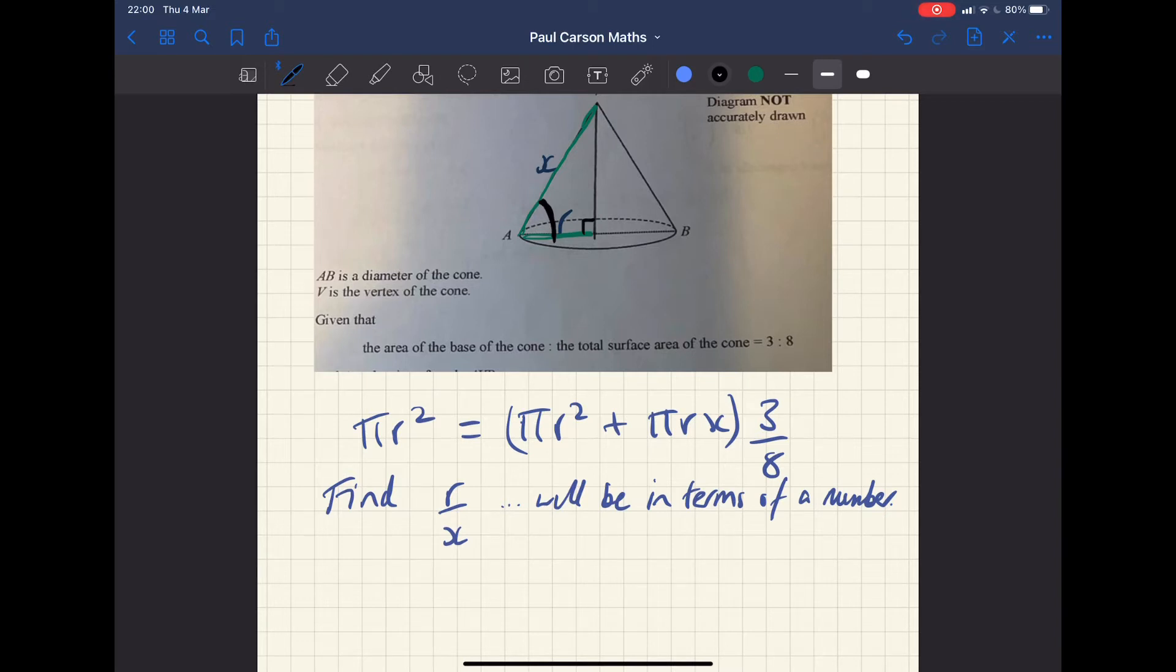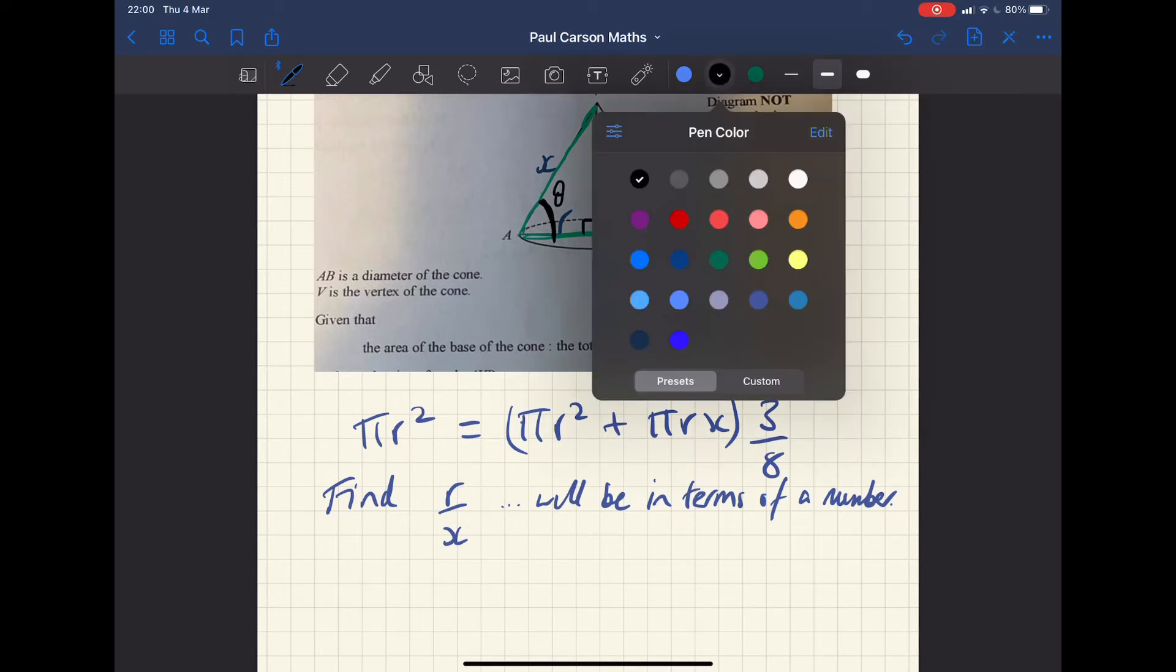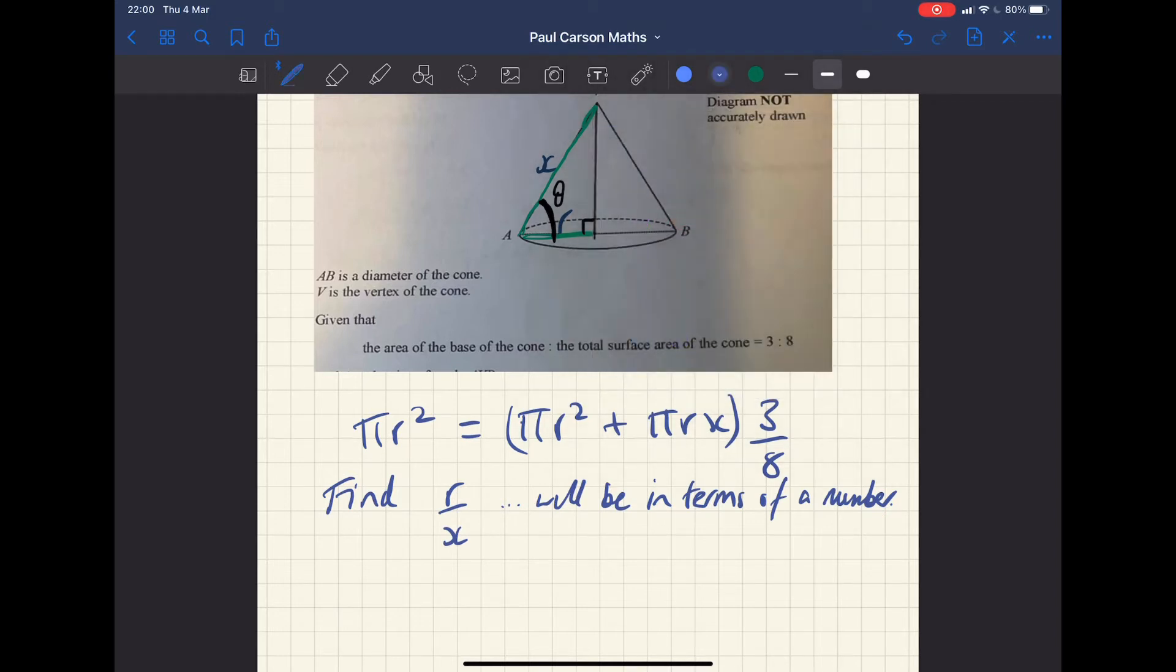But r over x, and then one of the trig identities, trig relationships, either sine, cos, or tan, will give us this angle here. We'll call it theta. So doing that, then we need to find r over x.